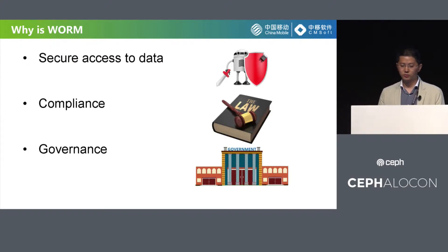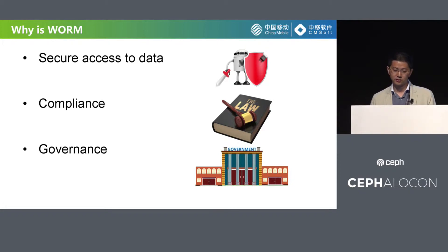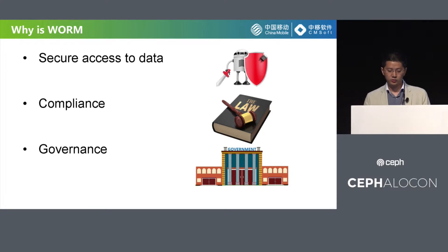Now we have known what WORM is, but why do we need it? With the advancement of science and technology and social development, information has exploded, and the issue of security, access, and application of data has greatly received attention. For example, cold cases, medical cases, financial securities, and so on — these important data are specified in accordance with the law. They can only be read and not overwritten during the time period. Therefore, such data needs to be tamper-proof. The WORM feature provides a write-once multiple read technology. It is a commonly used method for data security, access, and archiving in the storage industry. It is designed to prevent data from being tampered with and to record and archive data.